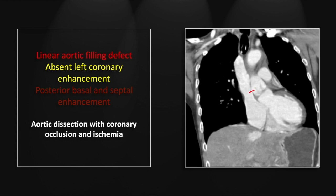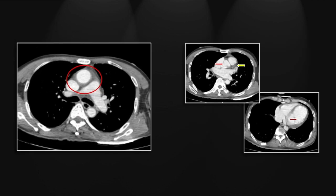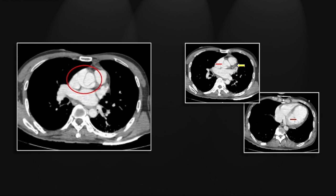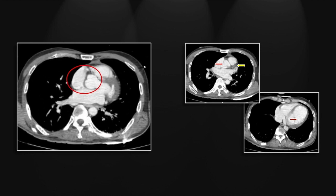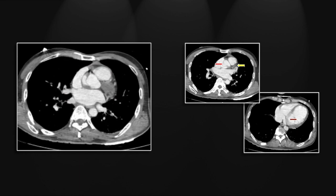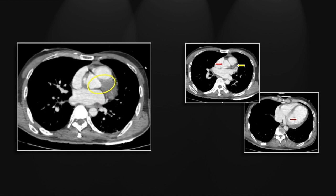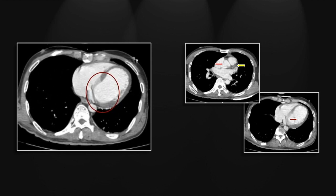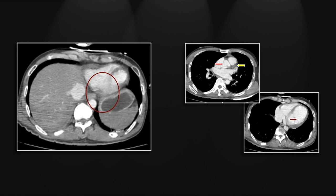On the coronal you can appreciate that linear filling defect well above the level of the aortic valve, and at the left coronary ostium the left main shows no evidence of contrast opacification. There is normal enhancing septal, posterior, and inferior myocardium with the relative hypodense remainder consistent with ischemia. On the cine version of the dissection you can see very nicely that it passes directly across the left coronary ostium.